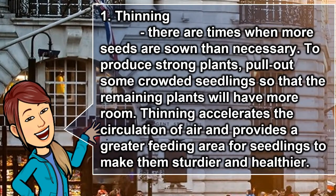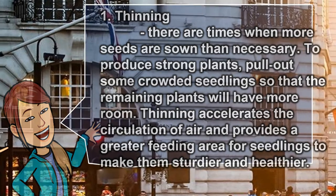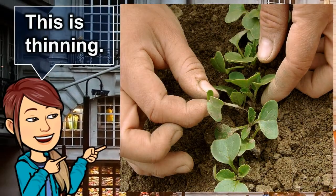1. Thinning: there are times when more seeds are sown than necessary to produce strong plants. Pull out some crowded seedlings so that the remaining plants will have more room. Thinning accelerates the circulation of air and provides a greater feeding area for seedlings to make them sturdier and healthier.